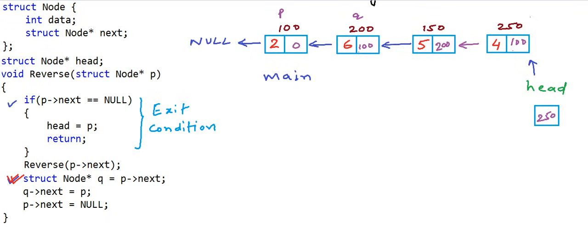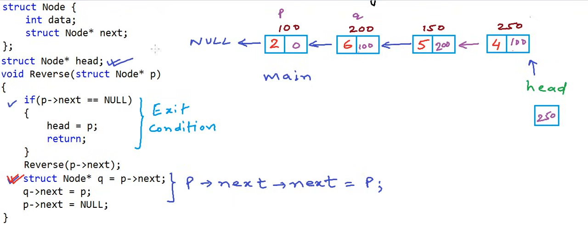There are a couple more things to note. Instead of writing Q->next = p and p->next = null as two lines, we could write p->next->next = p as one line — though that is more obfuscated. Also, we assumed head is a global variable. If it is not, the reverse function will have to return the address of the modified head. I leave that as an exercise. So this was reversing a linked list using recursion. Thanks for watching.